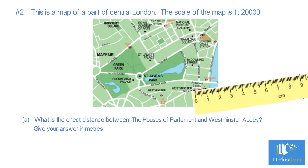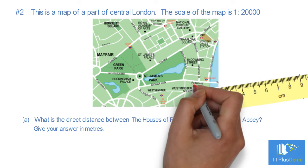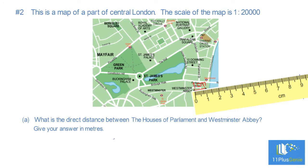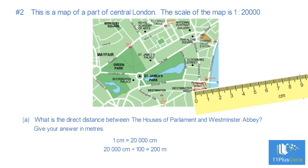Measuring the distance between the Houses of Parliament and Westminster Abbey, it is one centimeter. So the actual distance is twenty thousand centimeters. Since one hundred centimeters equals one meter, twenty thousand centimeters divided by one hundred equals two hundred meters.